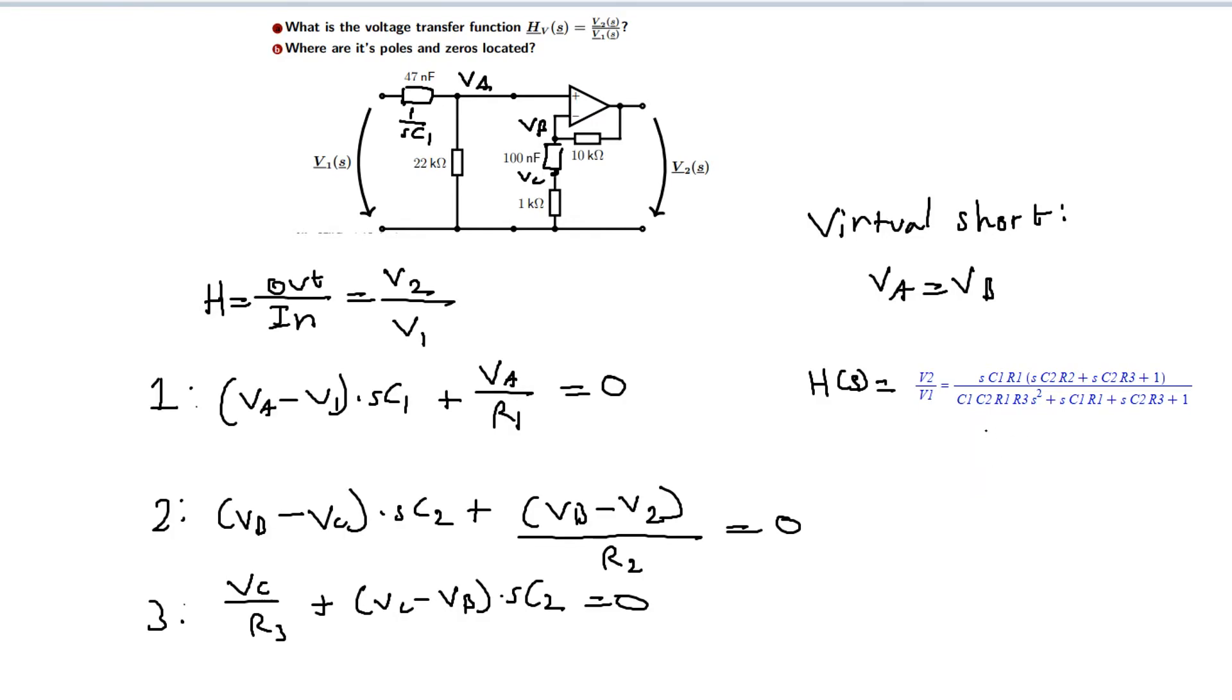The transfer function is not in standard form. For it to be in standard form, the term before the highest order of s has to be 1. This is not the case, but it can easily be made into standard form if we just divide every term in the entire transfer function, both numerator and denominator, with this term: c1, c2, r1, and r3. But I'm not going to do that because it's just a matter of how it looks. You will get the same result if you plug in the same values. Anyway, this is the transfer function for the circuit.